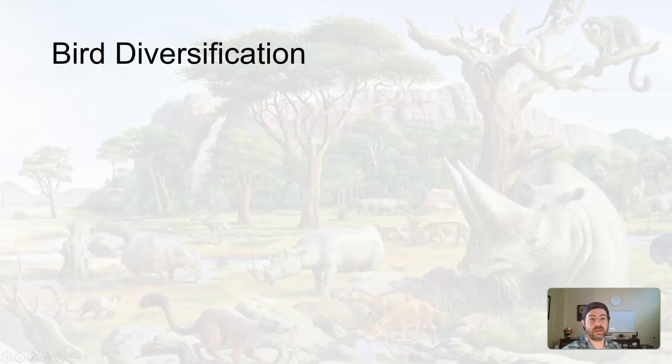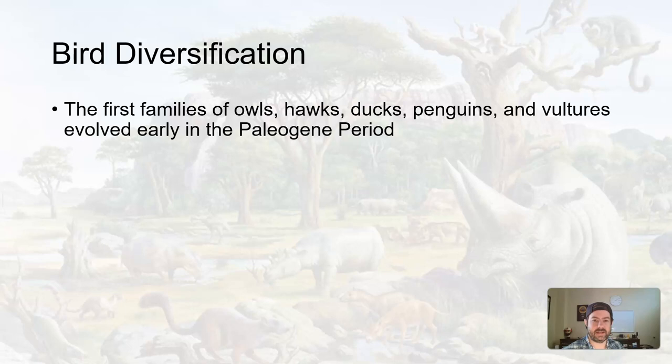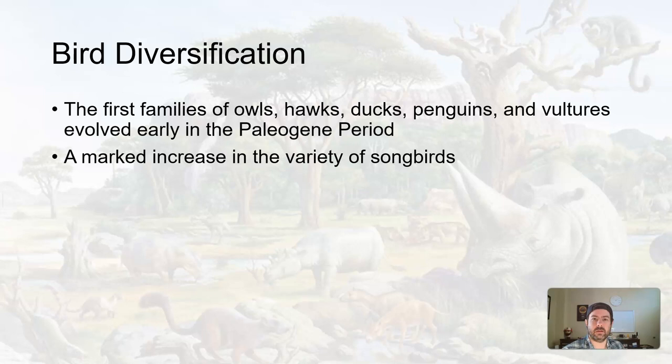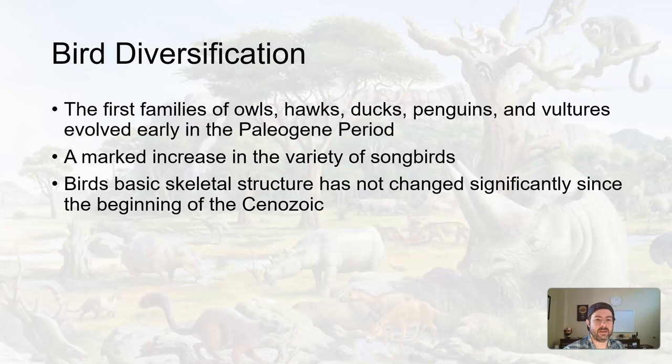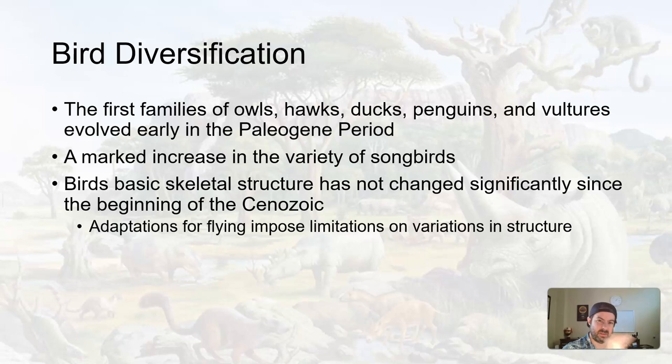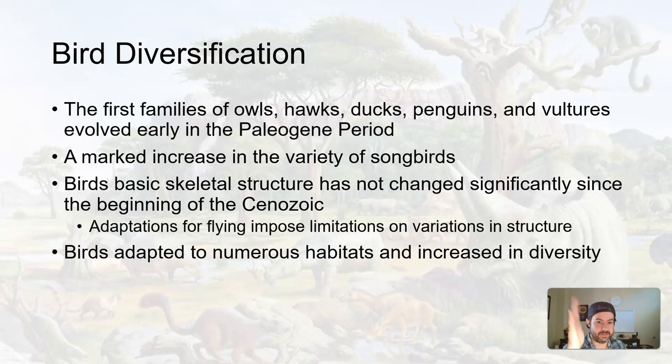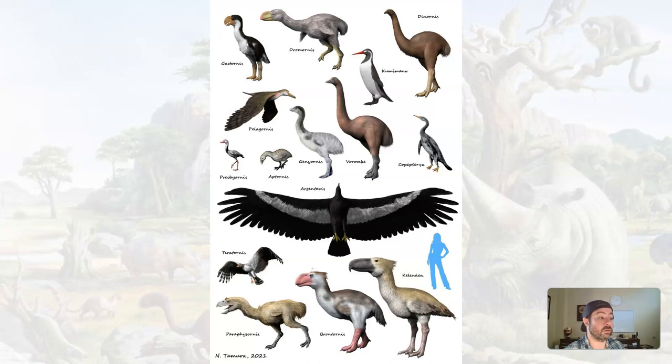Birds began to diversify in the Paleogene as well. The first families of owls, hawks, ducks, penguins, and vultures evolved during the Paleogene period, along with a marked increase in songbirds — the ones that whistle. The basic skeletal structure of birds has not changed significantly since the Cenozoic because the adaptation to fly, once put into place, is kind of what you need to stay flying. Birds adapted to numerous habitats all across the world, and here is a look at some of the early types of birds — very weird-looking initially.